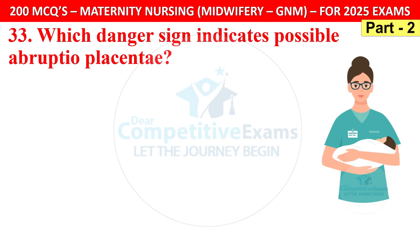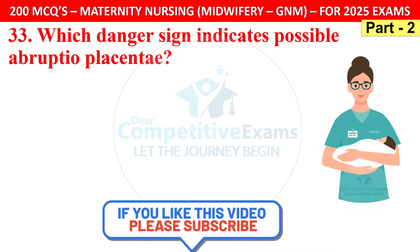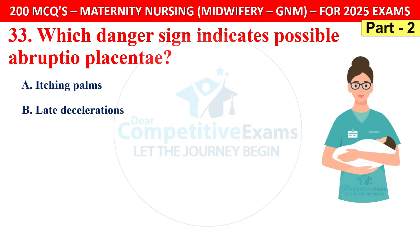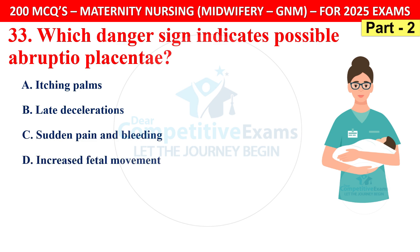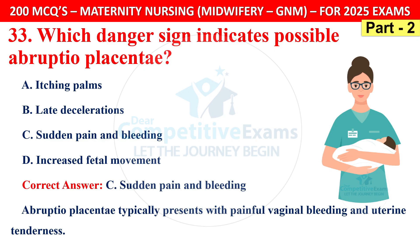Question 33: Which danger sign indicates possible abruptio placentae? Options are itching, late deceleration, sudden pain and bleeding, or increased fetal movement. The correct answer is C — sudden pain and bleeding. Abruptio placentae typically presents with painful vaginal bleeding and uterine tenderness.